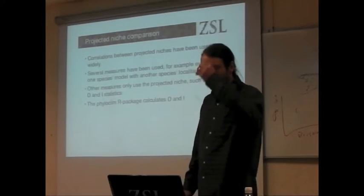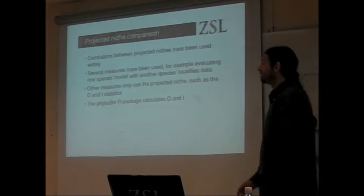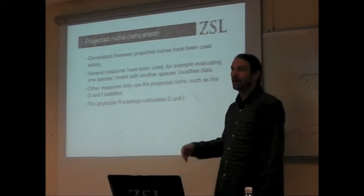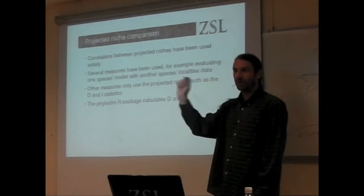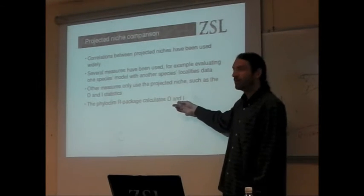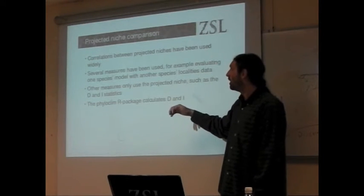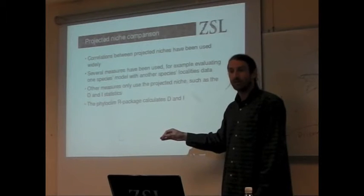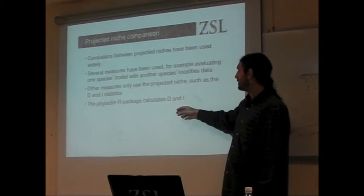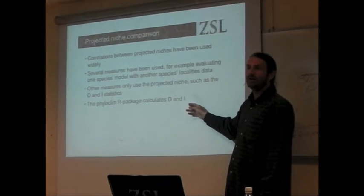We can compare the similarities of the areas selected by these two maps. So this sort of correlation, we could do something like a Pearson correlation by just picking random points across. But there's specific methodology for niche comparisons. This is the D and the I statistic.